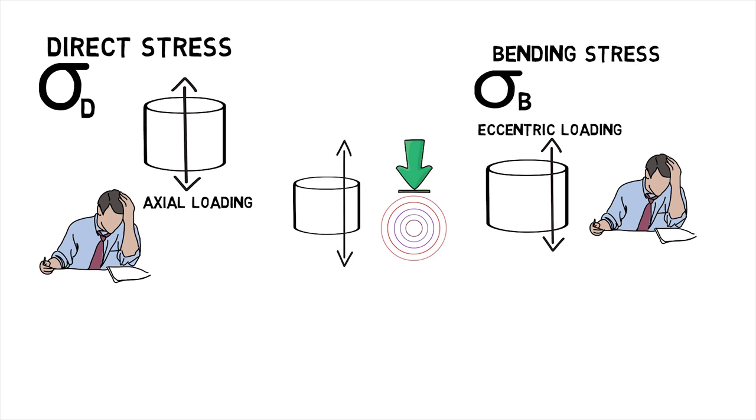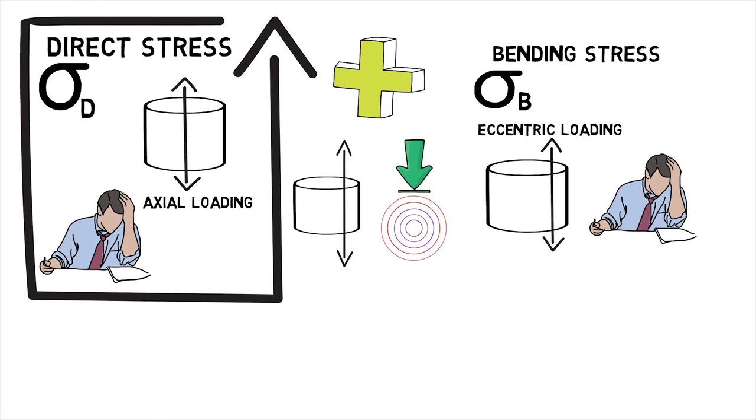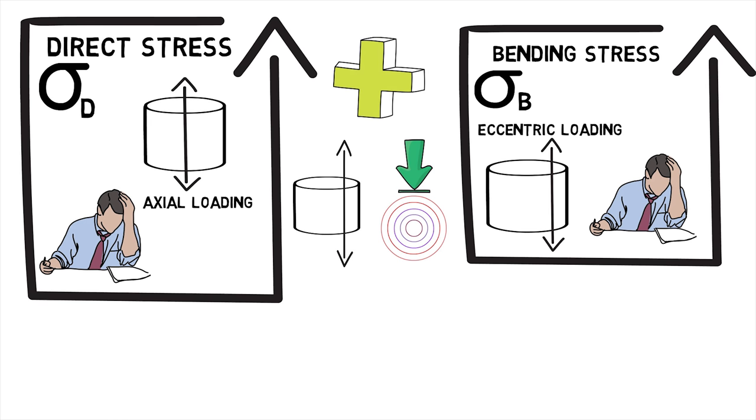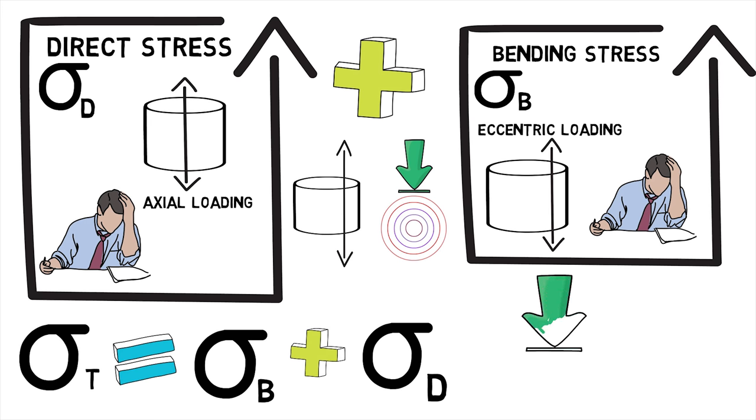If the loading is eccentric, the total maximum stress will be the summation of direct stress and bending stress. It is denoted by σt and is the sum of σb and σd.